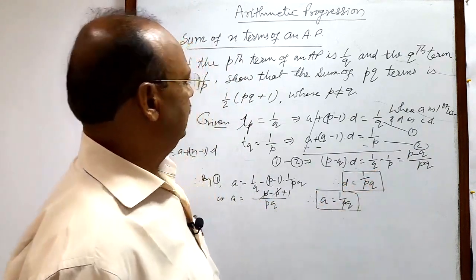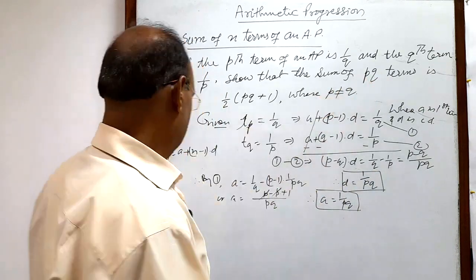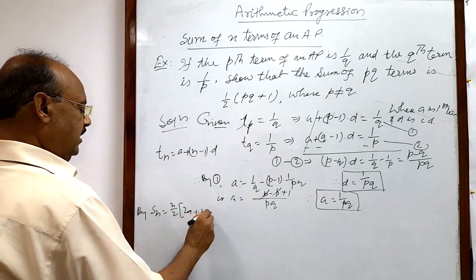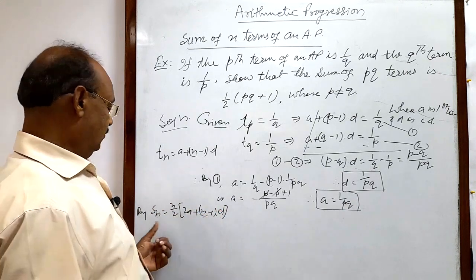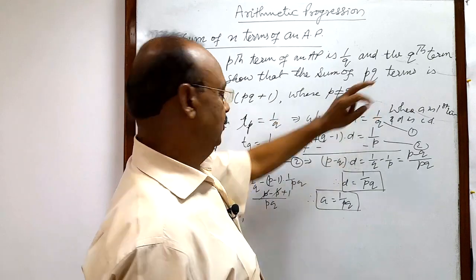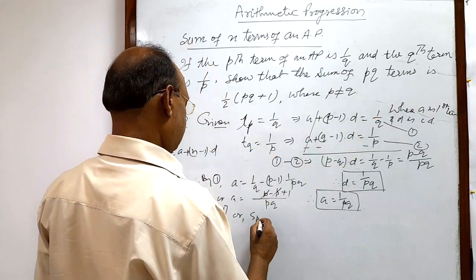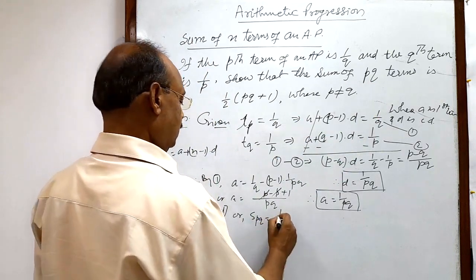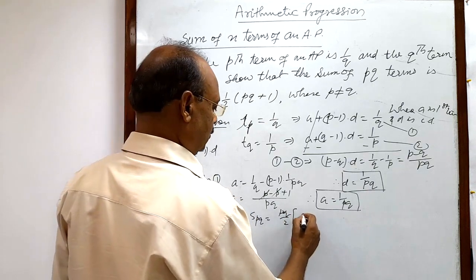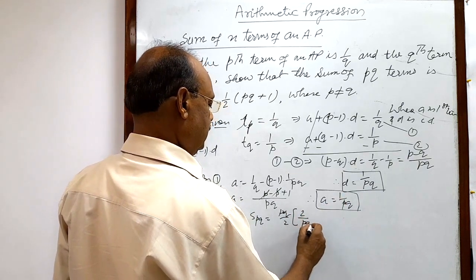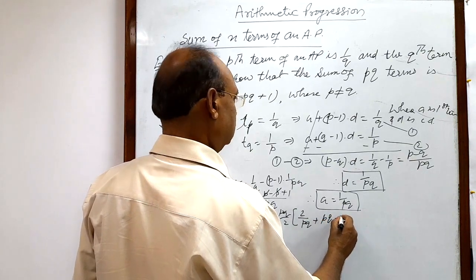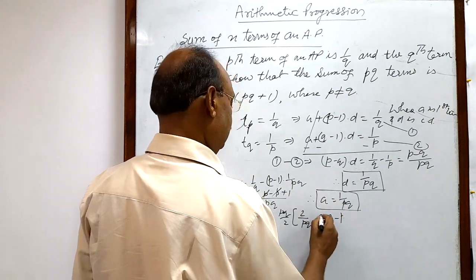Now we find the sum of pq terms. Using the formula S_n = (n/2)[2a + (n − 1)d], we substitute n = pq, a = 1/pq, and d = 1/pq. So S_pq = (pq/2) × [2 × (1/pq) + (pq − 1) × (1/pq)].